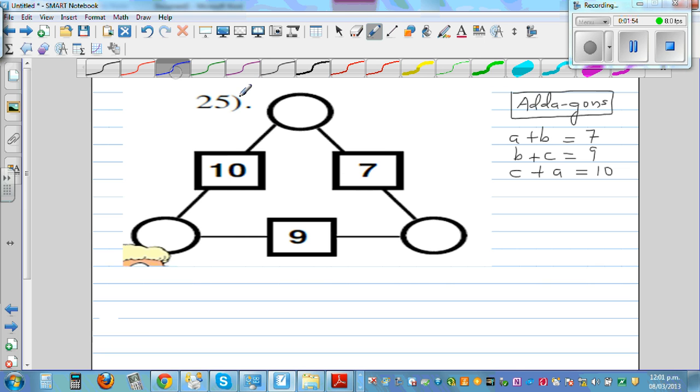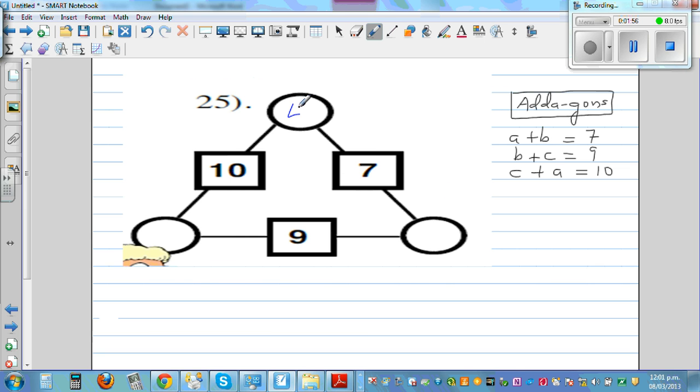Now let's do 4 and 3, what happens? 4 and 3 is 7, 3 plus 6 is 9, and 6 plus 4 is 10. So this is right.